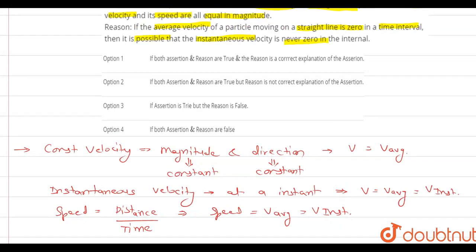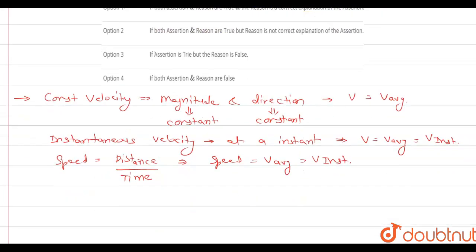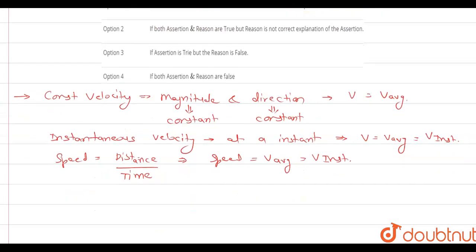Now we have to find whether the second statement is correct or not. The second statement says: if the average velocity of a particle moving in a straight line is zero in a time interval, then it is possible that the instantaneous velocity is never zero. To understand this, we'll take an example.